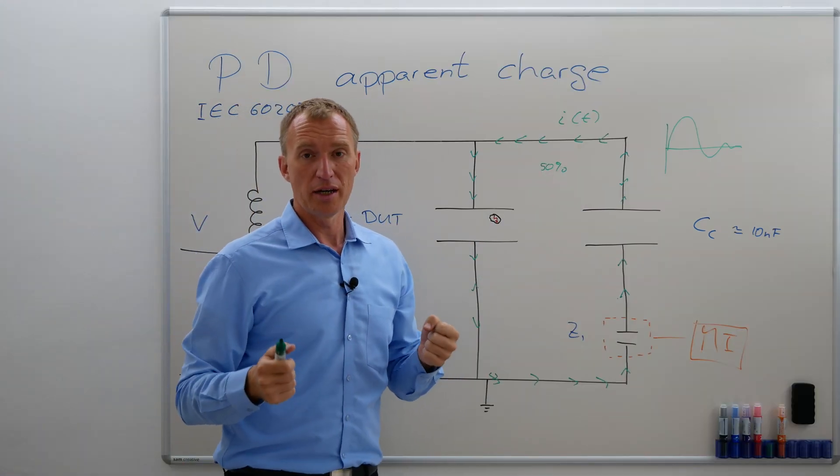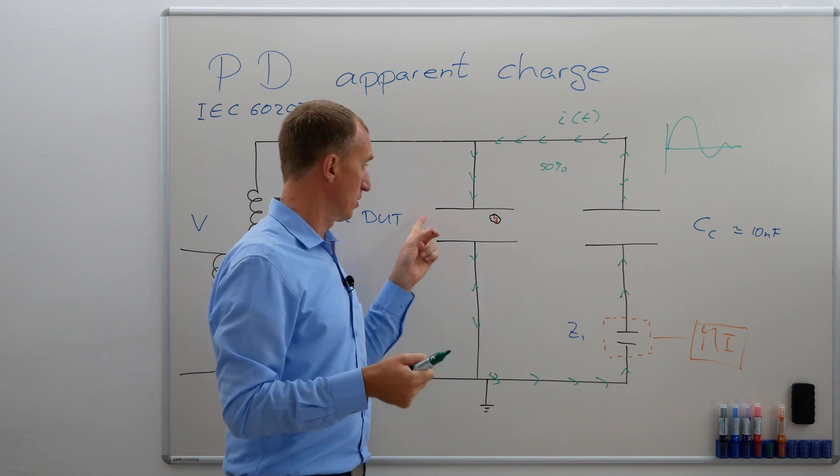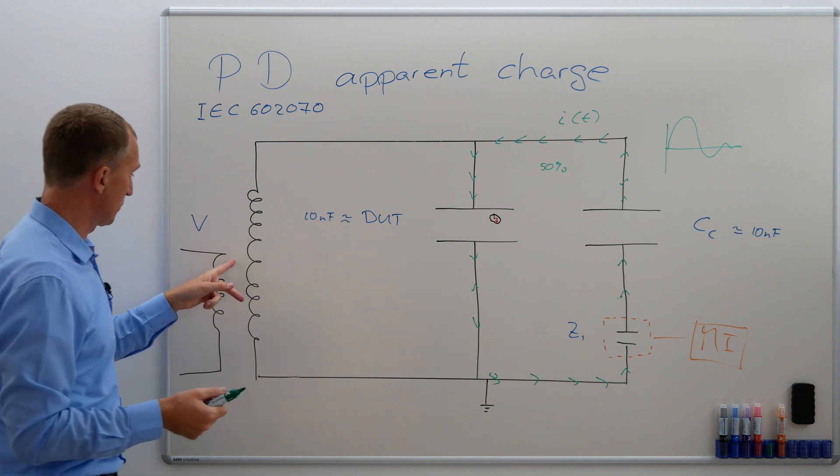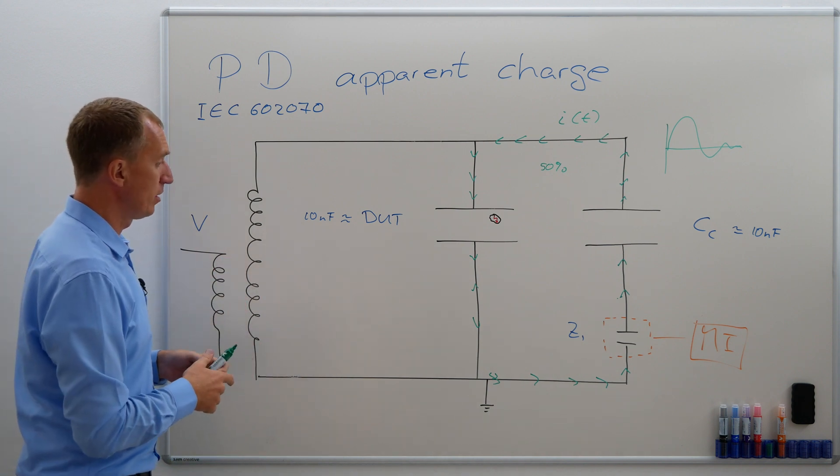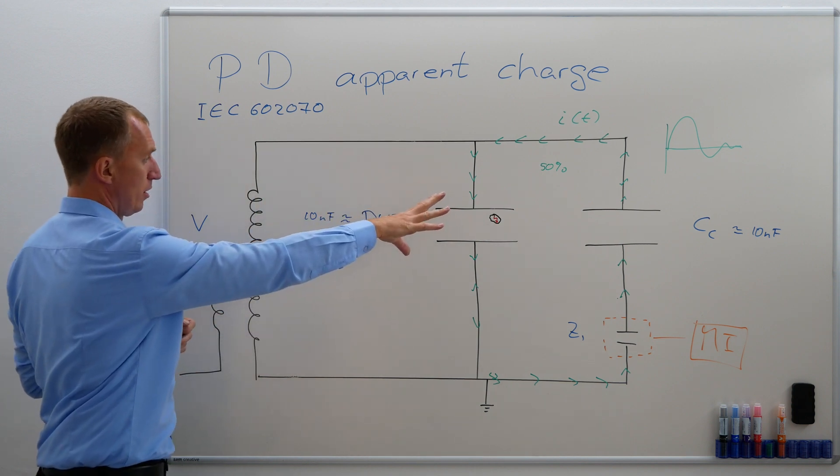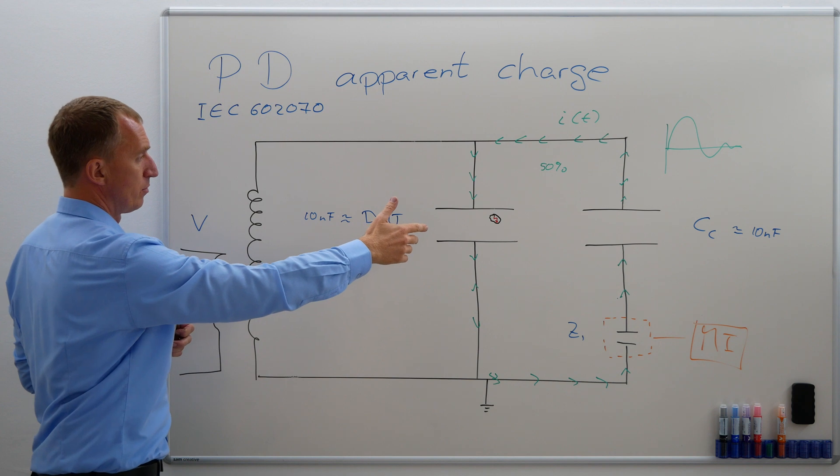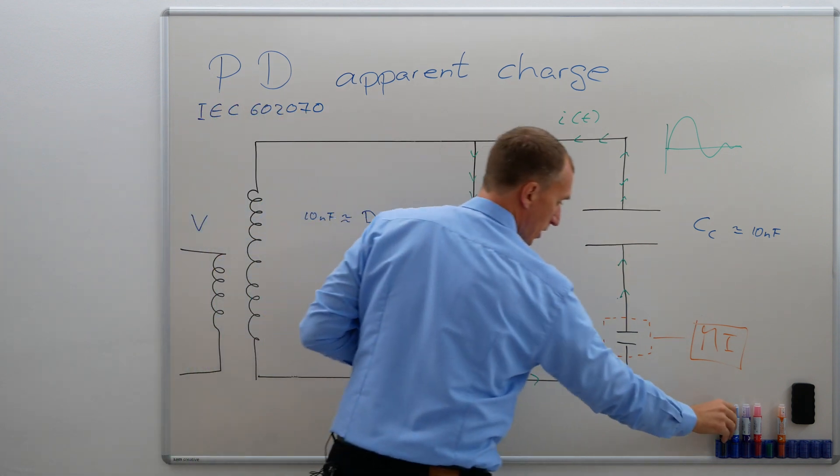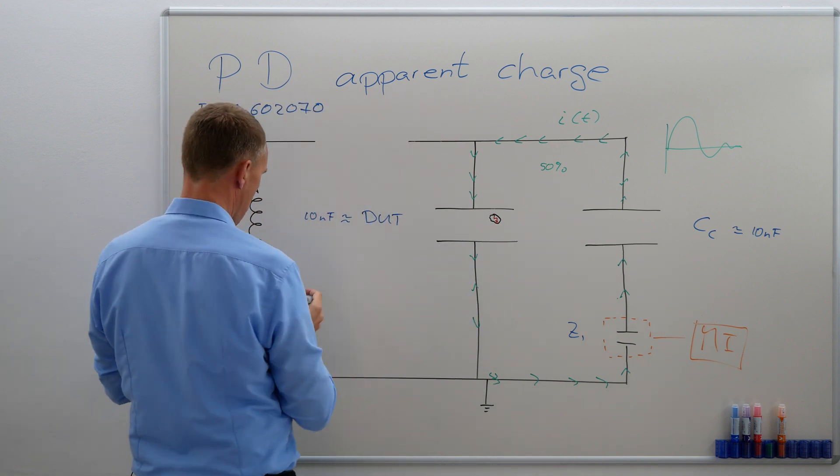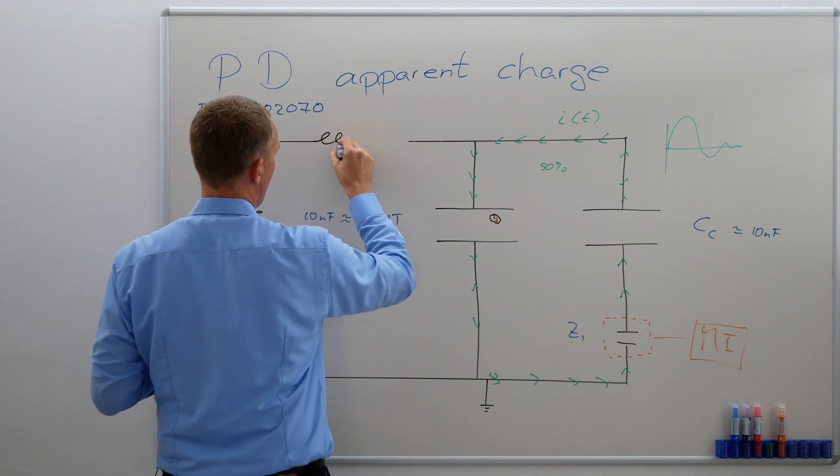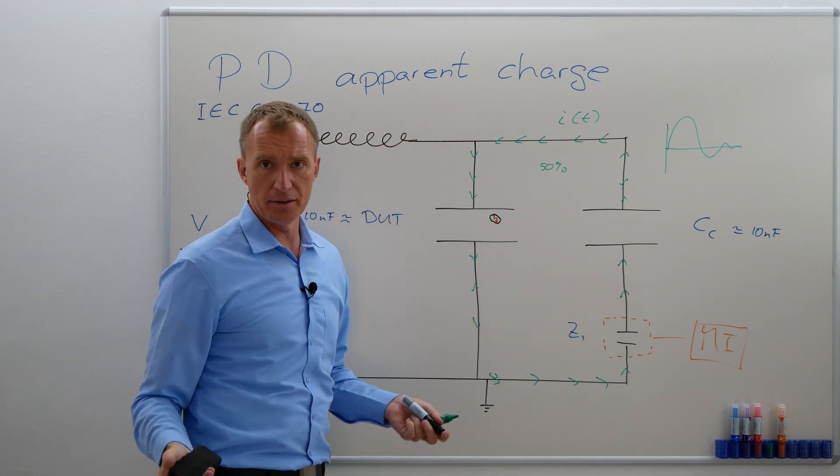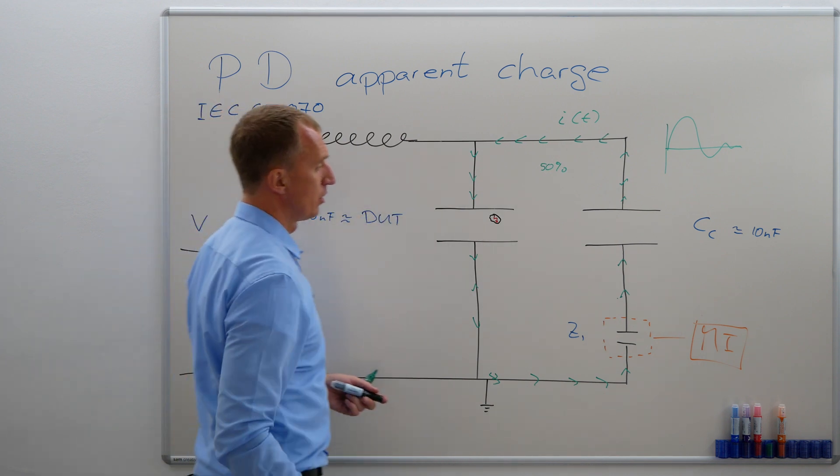This however is only true if there is nobody else helping us to recharge. And as we know, a high-voltage transformer usually has a lot of capacitance as well. So therefore, we have to try to limit the charge transfer going in here, at least for the time being, by means of, for example, a blocking impedance. And that is the reason why the IEC 60270 states that there needs to be a blocking impedance in here, in order to at least hinder the charge transfer coming from here to here.